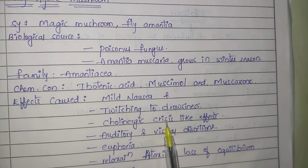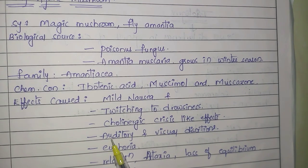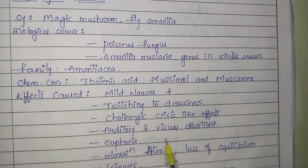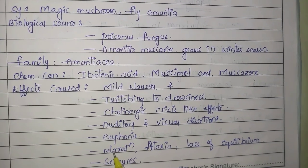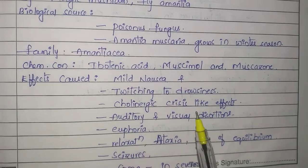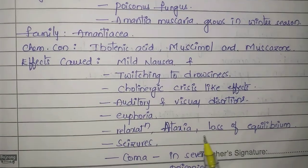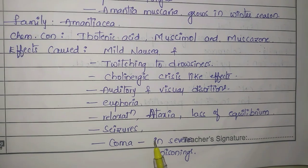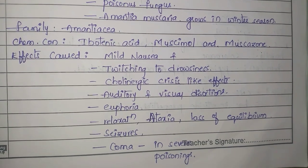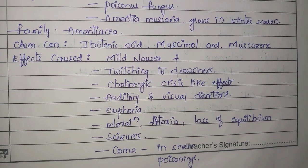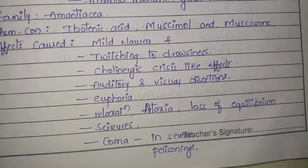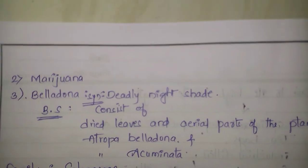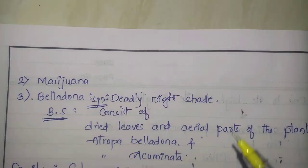It also causes auditory and visual distortions, euphoria, relaxation, ataxia, and loss of equilibrium. In severe poisonings, seizures and sometimes coma may also occur. The second hallucinogen is marijuana.